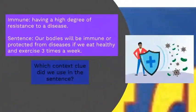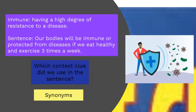Moving on to the word immune. Immune means having a high degree of resistance to a disease — to have a strong body that is able to fight diseases. Here's a sentence: 'Our bodies will be immune, or protected, from diseases if we eat healthy and exercise three times a week.' Which context clue did I use? I used synonyms, because the words immune and protected have the same meaning — they are synonyms that share the same or a similar meaning.